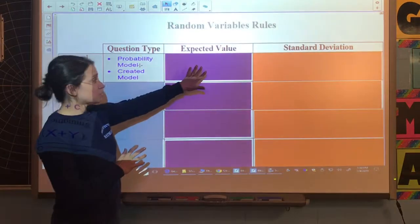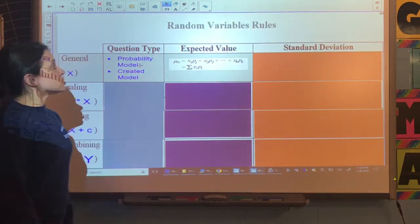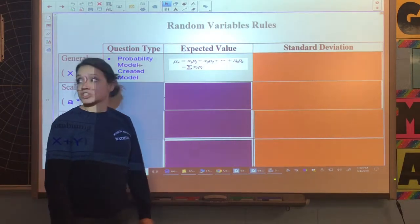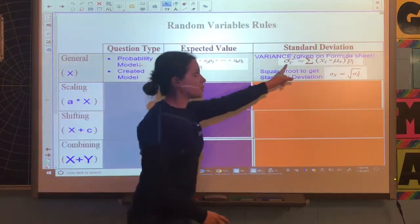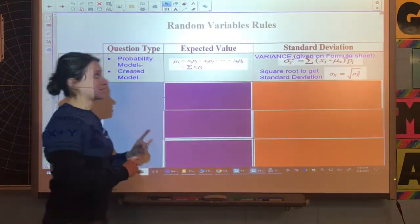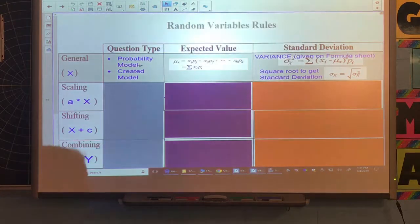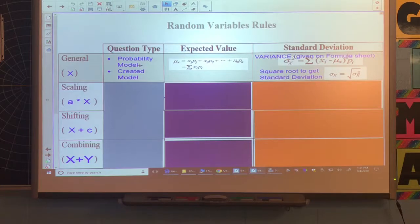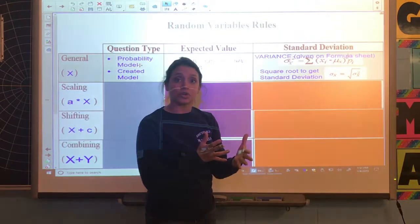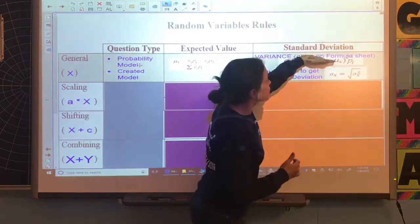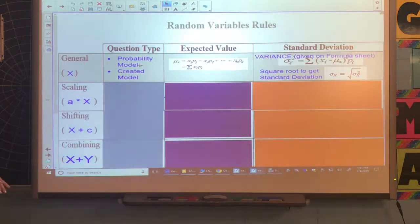The expected value formula is on your formula sheet. Another word for that is mean. Then we have the standard deviation formula. Notice this is really important: on your formula sheet is the variance formula, not actually the standard deviation. When you see that sigma squared, that's talking about the variance. You must square root that value in order to get standard deviation. The reason they're giving you the variance is because you're going to use the variance when you start combining the random variables. We're not going to be working with the standard deviation, we're going to be working with the variance.